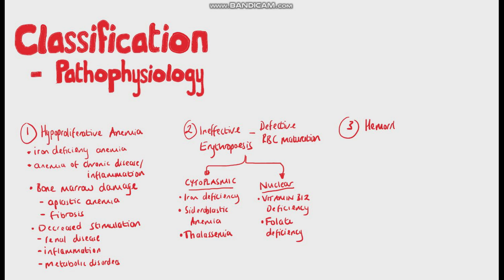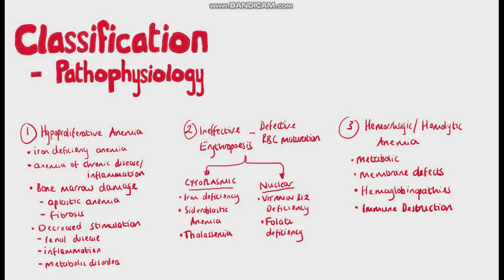Then finally we have the section for hemorrhagic and hemolytic anemia, coming from metabolic defects, membrane defects, hemoglobinopathies, and immune destruction.